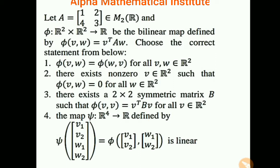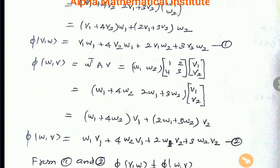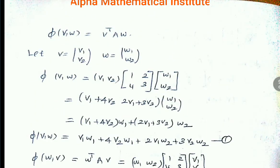In this problem, one bilinear transformation is given whose domain is R2 cross R2 and whose co-domain is R. That bilinear transformation is defined by φ(V, W) equals V transpose AW, where A is the matrix 1, 2, 4, 3. Some statements are given and we have to choose which statement is correct. So let us write the given information: φ(V, W) equal to V transpose AW.